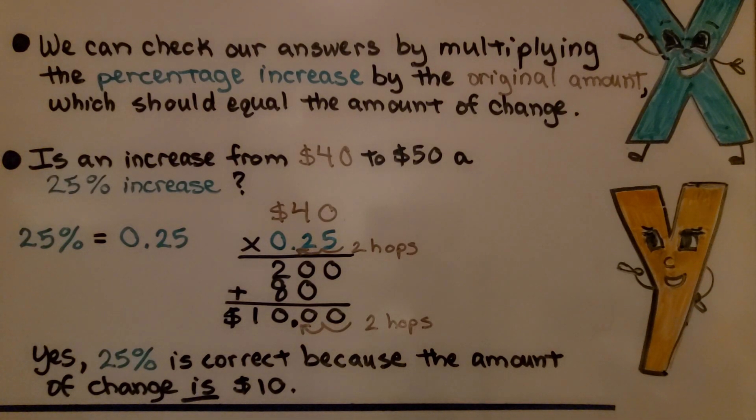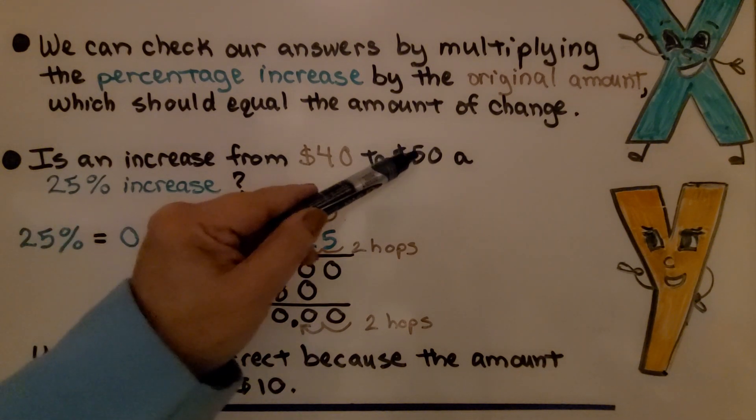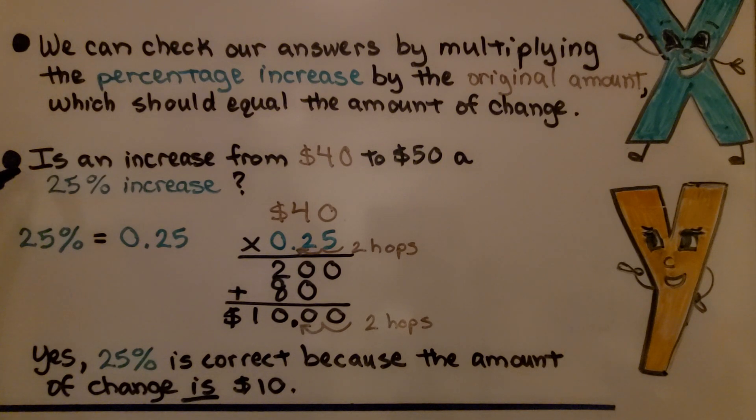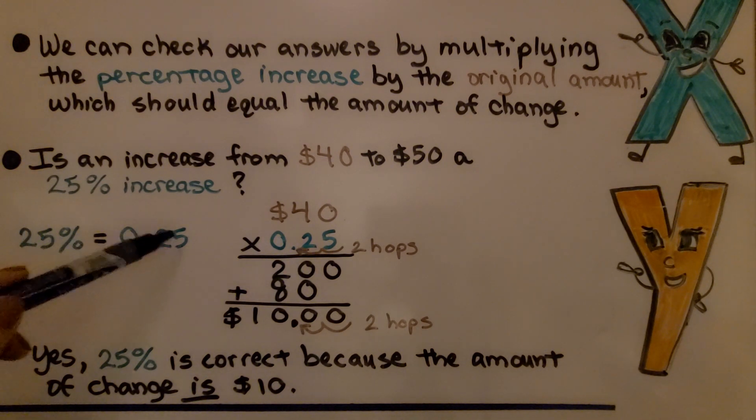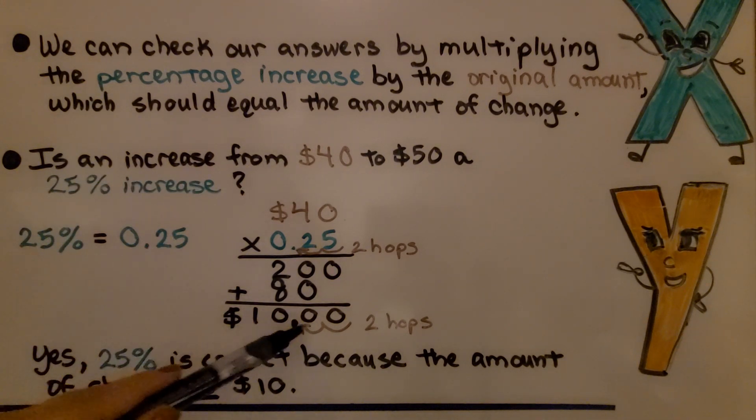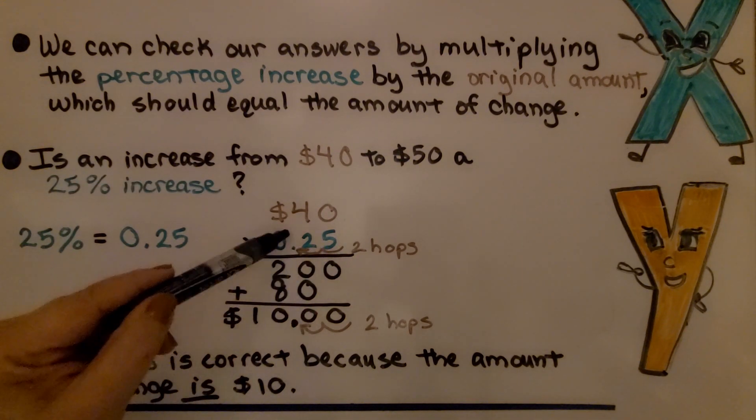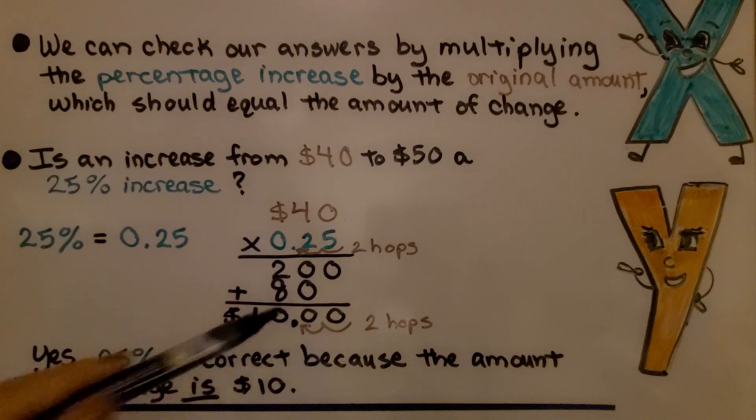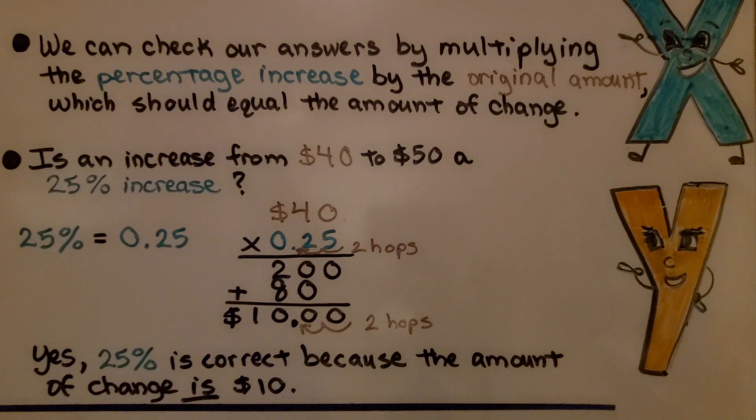We can check our answers by multiplying the percentage increase by the original amount, which should equal the amount of change. So is an increase from $40 to $50 a 25% increase for our blue jeans? We multiply the percentage, 25% is 0.25, by the original amount, $40, and we get $10. So remember, if there's two hops in the problem, there's going to be two hops in the product. So yes, 25% is correct because the amount of change is $10.